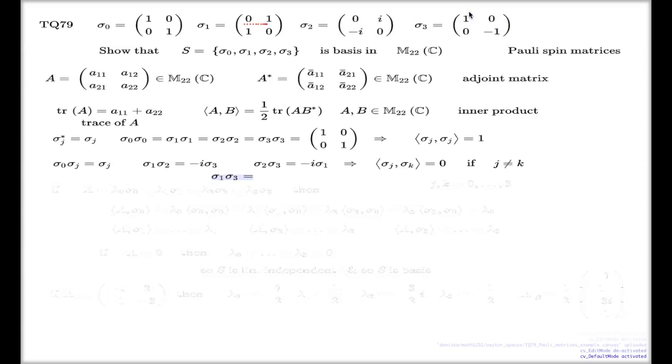First row, first column, 0. First row, second column, negative 1. Last row, first column - sorry, I said negative i, I'm supposed to say negative 1. This row and this column is 1, and the last row and last column is 0. So it's this matrix times i, isn't it? Sigma 2. That's the coupling.